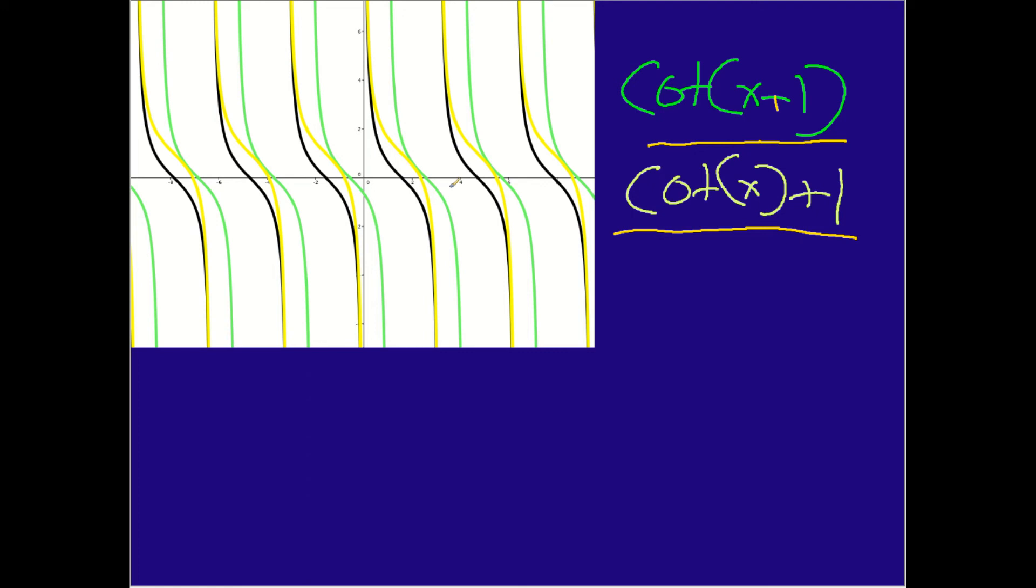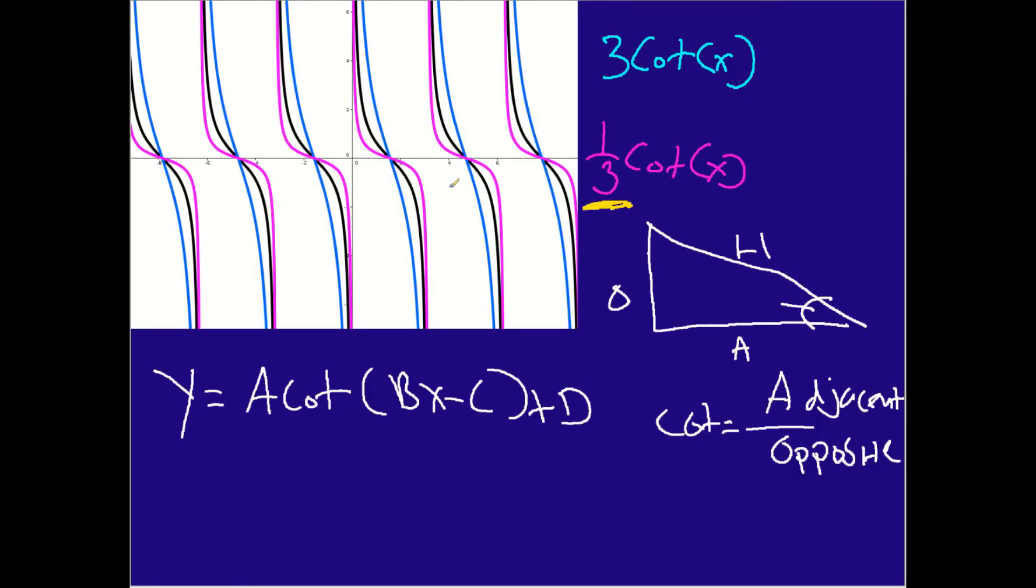So let me try to wrap up what we talked about and conclude this video. So in this video, we talked about the cotangent periodic function. And so basically, the cotangent is the reciprocal of tangent. And so it's adjacent over opposite, whereas tangent is opposite over adjacent when you're thinking about the trigonometric triangle, if you will.